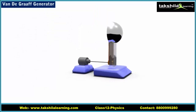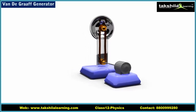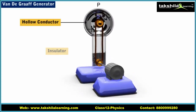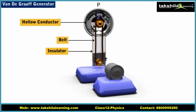Let us now look at the schematic diagram of the Van de Graaff generator. It consists of a hollow metallic conductor P, which is mounted on an insulating column. A pulley S is mounted at the center of the sphere P. Another pulley T is mounted near the base of the conductor, and T can be continuously driven by an electric motor or by hand in case the device is being used for demonstration. A belt of insulating material such as silk or rubber passes over the pulleys. As the pulleys move continuously, the belt also moves continuously. Two comb conductors, X and Y, have metallic needles mounted near each of the pulleys, pointing towards the belt.